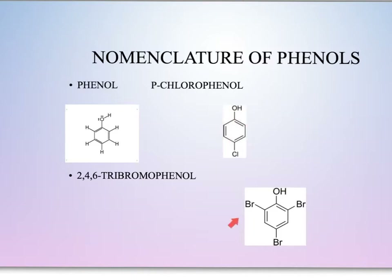In this next example, we again notice that we have a phenol present, and then we have three bromines coming off. Those bromines come off of carbons 2, 4, and 6. So we have a 2,4,6-tribromophenol.